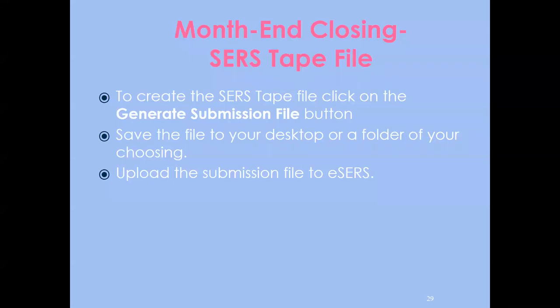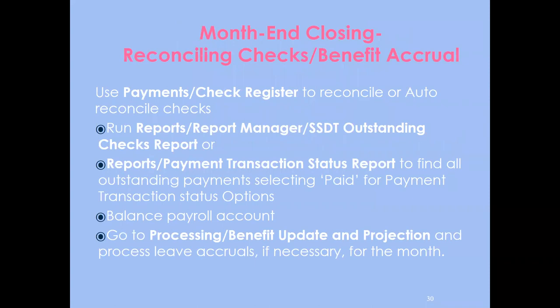To create the STIRS tape file: once everything is verified, click Generate Submission File and save it to your desktop or a folder of your choosing. Upload that submission file to e-STIRS, and your last June pay for the fiscal year is done. For month-end closing, reconcile checks and make sure your benefit accruals are complete.